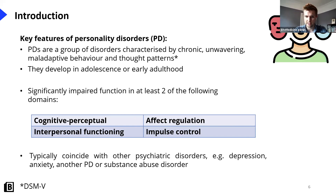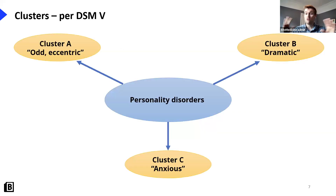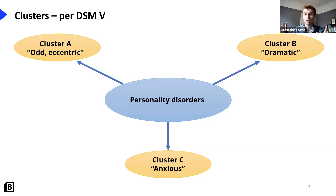Personality disorders often coincide with other psychiatric conditions — commonly depression or anxiety — or may occur alongside another personality disorder. We broadly group them into three clusters. In the exam, when faced with a vignette describing a personality disorder, first try to cluster them: is this person exhibiting odd and eccentric behaviour, dramatic behaviour, or anxious and reserved behaviour? Once you've identified the cluster, there are only two or three disorders within each to consider.